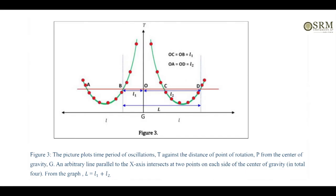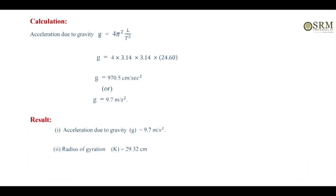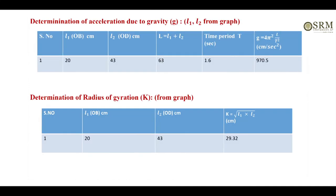Once we have values of time period corresponding to each length, we take length on the x-axis and time period on the y-axis to plot the graph. From the graph: L1 equals OB, L2 equals OD; OB equals OC equals L1, and OA equals OD equals L2. We find L1 and L2 from the graph, then add them: capital L equals L1 plus L2. Substituting L and T square into G equals 4 pi square L by T square gives us the G value. The radius of gyration K equals square root of L1 times L2, using L1 and L2 from the graph.